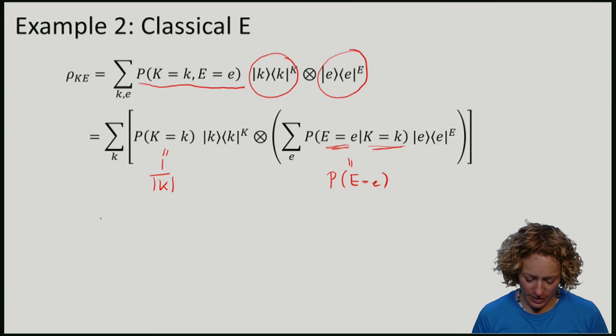You can convince yourself that this exactly means that my state looks like the maximally mixed state on k tensor a state on e.